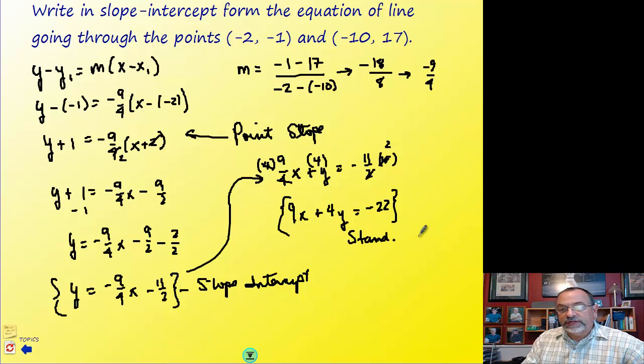So you can see I can use any form, or get to any form, just by manipulating the equation algebraically. And all I need is two points, and it doesn't matter which two points, because point-slope form allows me to do that. Okay, so I hope that was helpful. Make sure you remember those tips, and you should be able to do any of these problems. And I guess we'll see you in class.